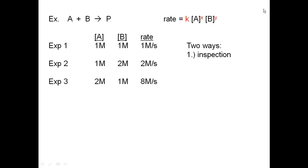Here's some data for A + B → products. The generic rate law is: rate = k[A]^x[B]^y. In experiment one: [A] = 1 M, [B] = 1 M, rate = 1 M/s. Experiment two: [A] = 1 M, [B] = 2 M, rate = 2 M/s. Experiment three: [A] = 2 M, [B] = 1 M, rate = 8 M/s. Looking at experiments one and two, A is held constant, B doubled, and the rate doubled — a linear relationship — so y = 1: first order with respect to B.